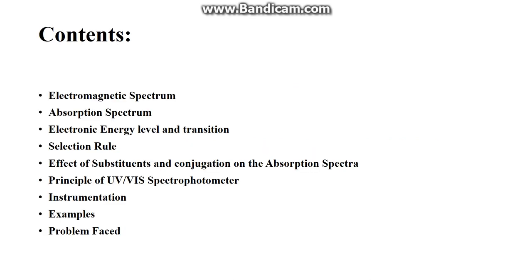So let us start the presentation. This presentation will consist of the following topics. First, we'll talk about the electromagnetic spectrum — what it is, how many wavelengths there are, and everything about it. Then we'll talk about the absorption spectrum, and then we'll cover electronic energy levels and transitions. Then we'll come to the selection rule, which is something you have to know in any kind of spectroscopy.